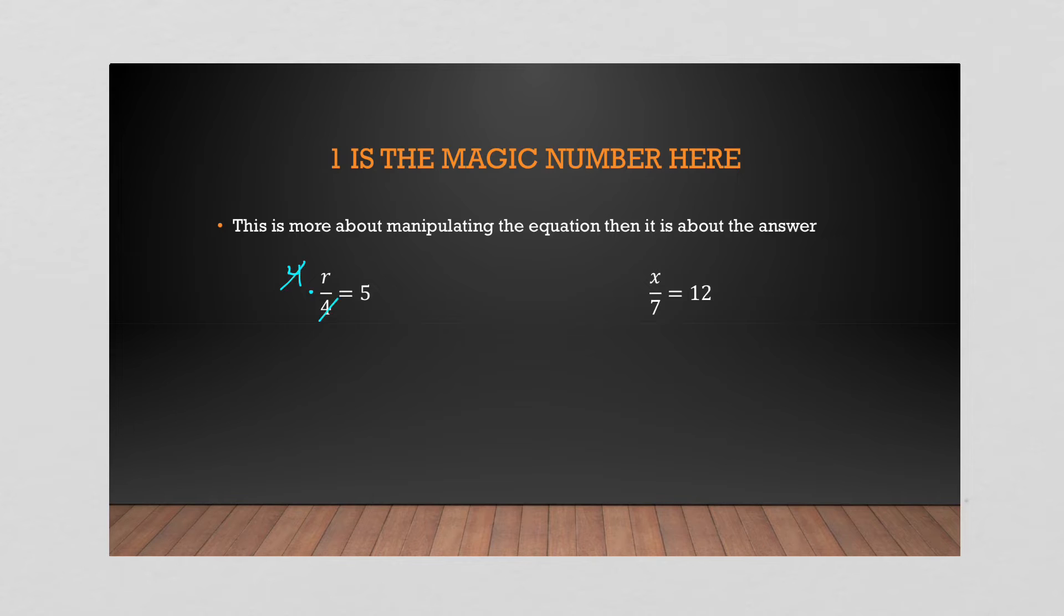So they're going to cancel out. In here, I'm going to multiply by four. So R is 20. Here, I'm dividing by seven. So I'm going to multiply by seven. Those cancel, multiply by seven. X equals 84.